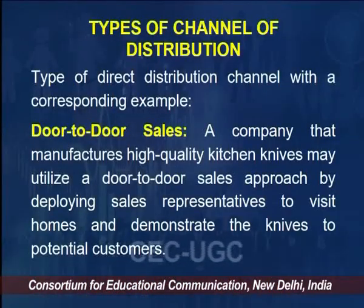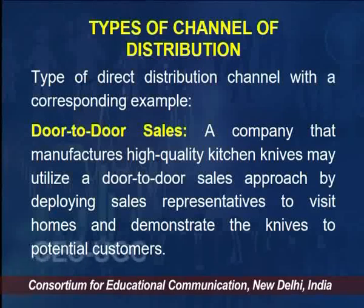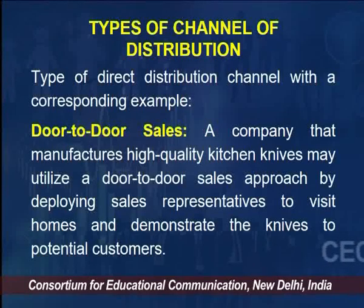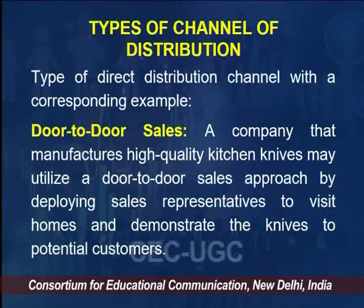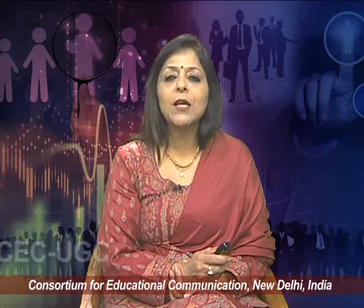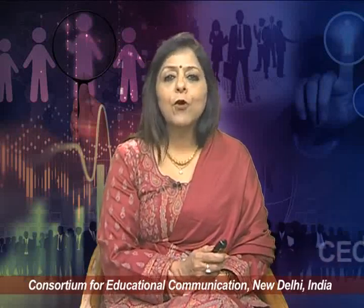Looking at the types of channel distribution with corresponding examples — for direct channel distribution, consider door-to-door sales. A company that manufactures high-quality kitchen knives may utilize a door-to-door sales approach by deploying sales representatives to visit homes and demonstrate the knives to potential customers. The representatives can showcase product features, answer customer queries, and take orders directly from interested customers.